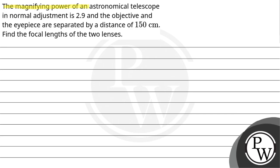Let's read the question. The magnifying power of an astronomical telescope in normal adjustment is 2.9, and the objective and eyepiece are separated by a distance of 150 centimeters. Find the focal lengths of the two lenses.